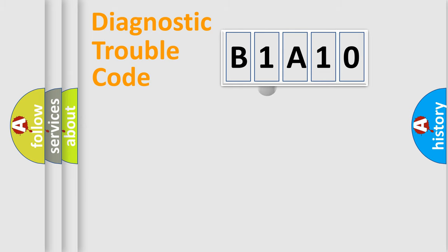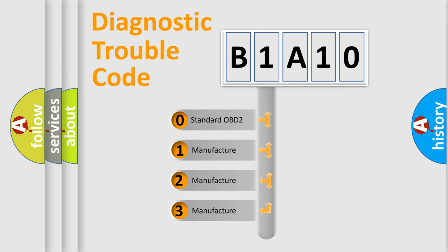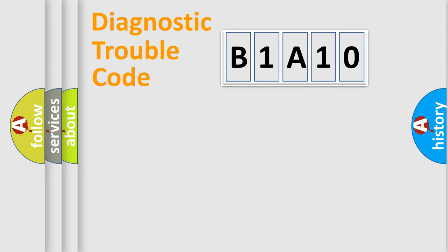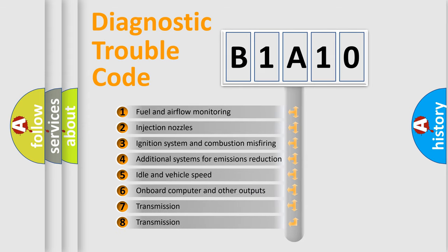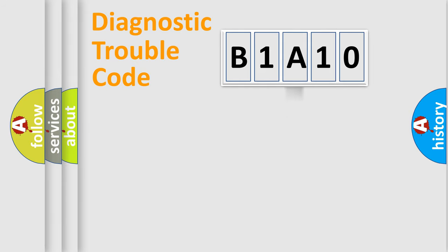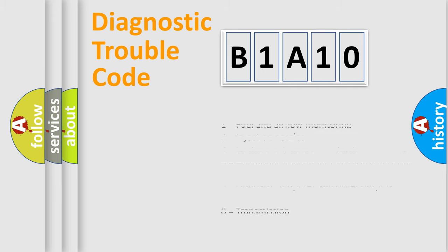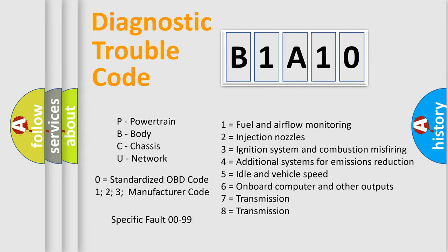This distribution is defined in the first character of the code. If the second character is expressed as zero, it is a standardized error. In the case of numbers 1, 2, or 3, it is a manufacturer-specific error. The third character specifies a subset of errors. This distribution is valid only for the standardized DTC code. Only the last two characters define the specific fault of the group — but only when the second character is zero.